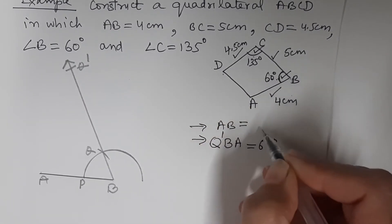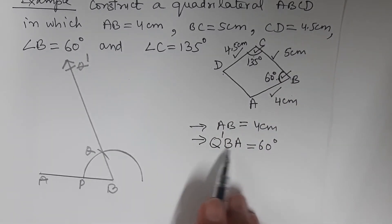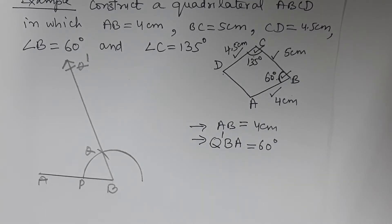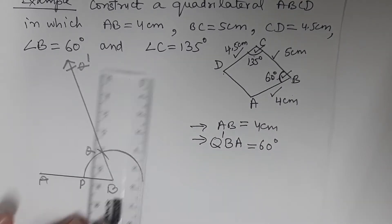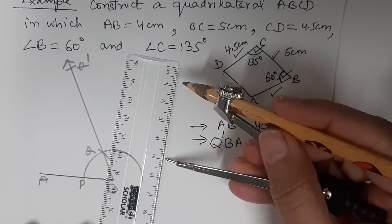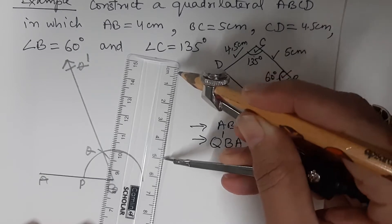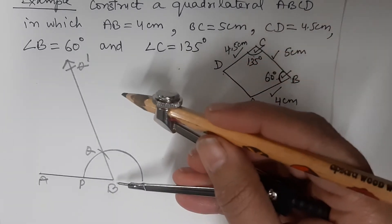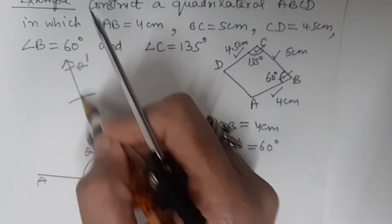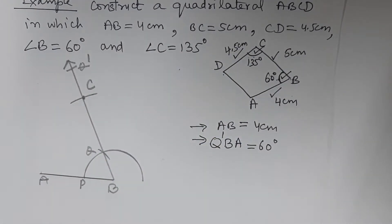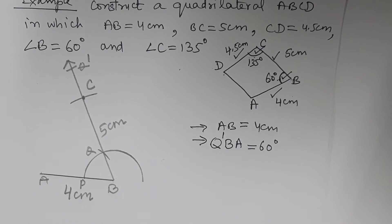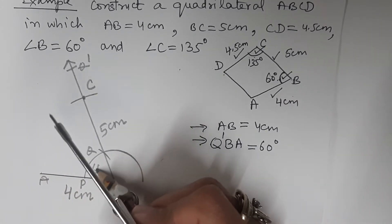We have drawn AB as 4 cm and constructed angle Q dash BA as 60 degrees. Now BC is given as 5 cm, so using the ruler we take a radius of 5 cm and with B as center, on the ray drawn earlier, we cut an arc. This arc intersects the ray at point C, so BC is 5 cm.